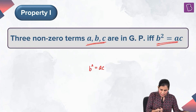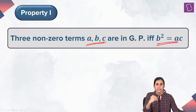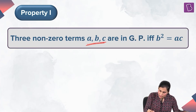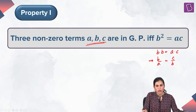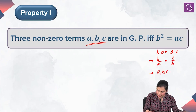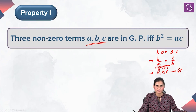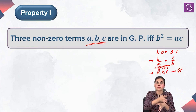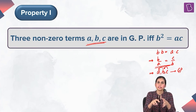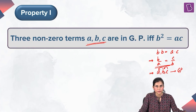Further, suppose A, B, C are three non-zero terms such that B squared equals AC. This means B into B equals A into C, which means B upon A equals C upon B. This means A, B, C are in GP because the ratio of successive terms is equal. Please remember: A, B, C are in AP when two times the middle term is the sum of the first and third, and three non-zero terms are in GP when the square of the middle term equals the product of the first and third term.